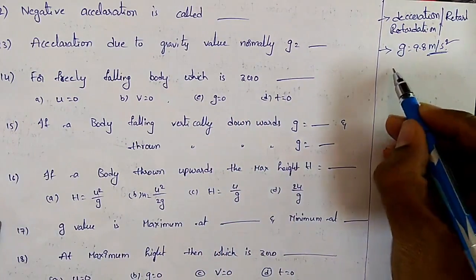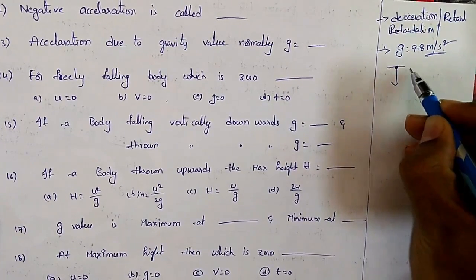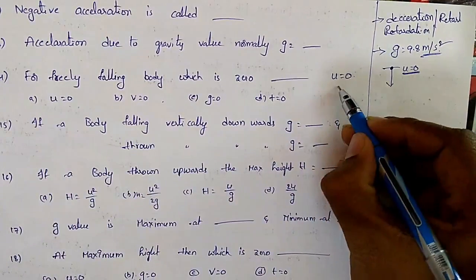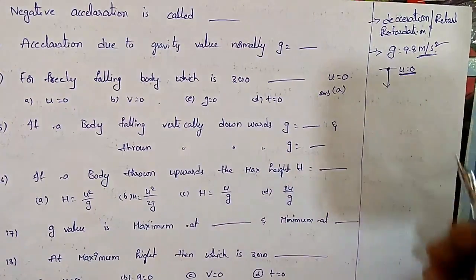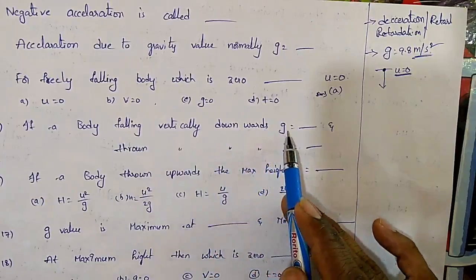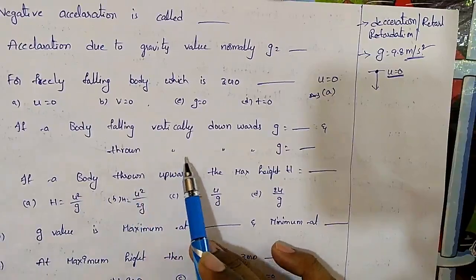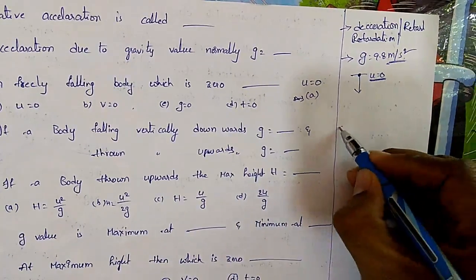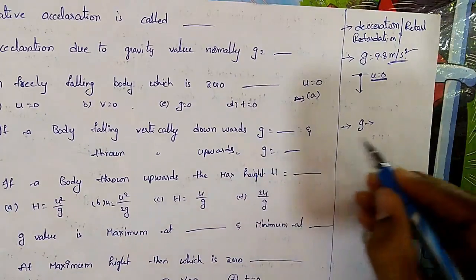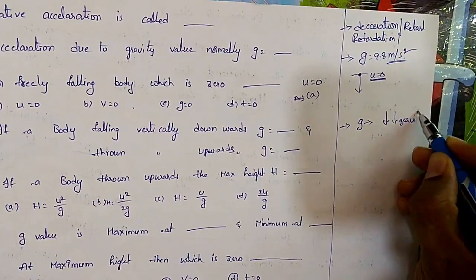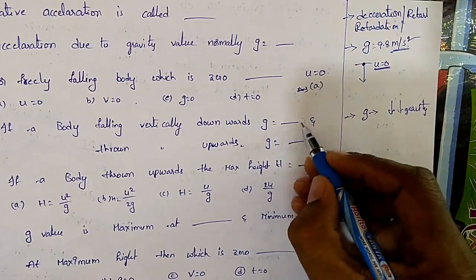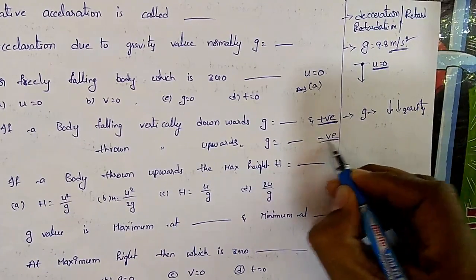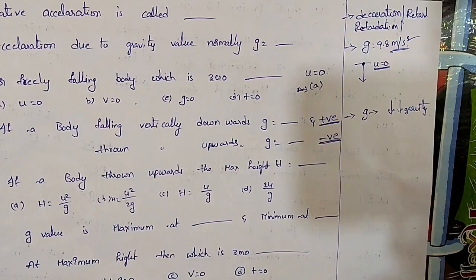For a freely falling body, the initial velocity u equals zero. If a body falls vertically downwards, g is positive because it is in the same direction as gravity. If the body is thrown vertically upwards, g is negative because it is in the opposite direction of gravity.